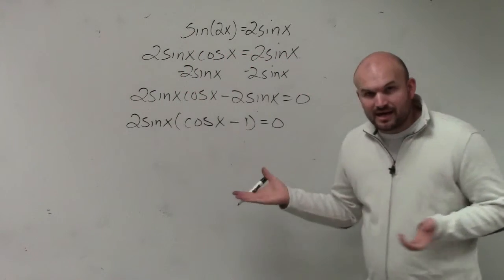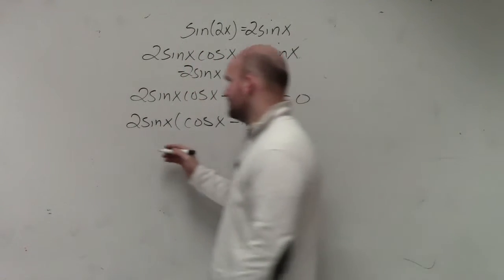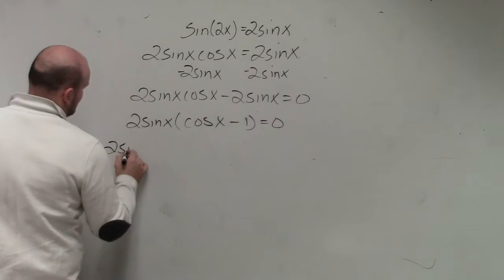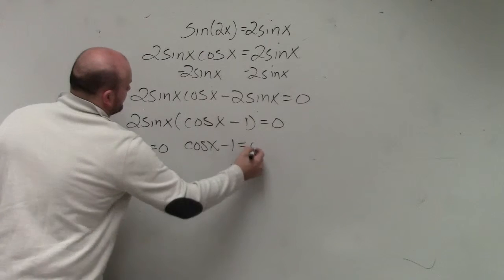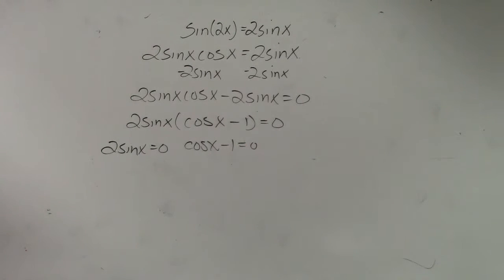Now what I can do is apply the zero product property. So you could say 2sin(x) = 0 and cos(x) - 1 = 0. Were they asking you to find all the answers between 0 and 2π, I believe?